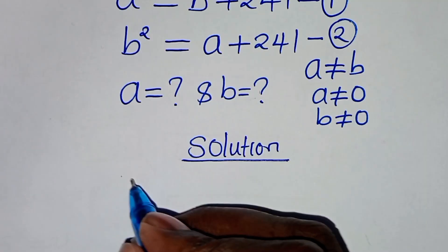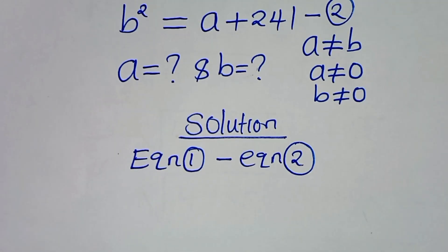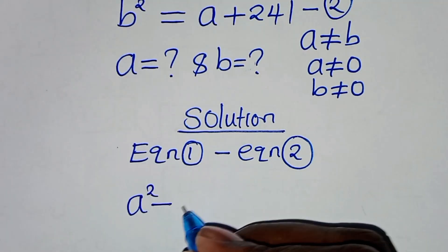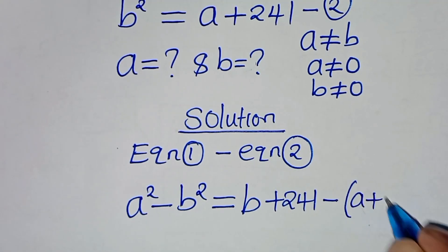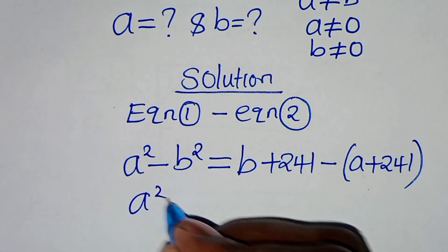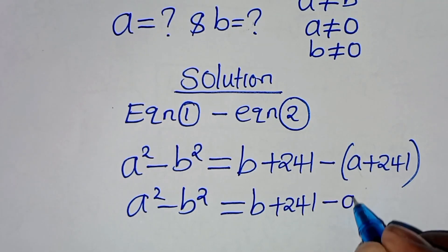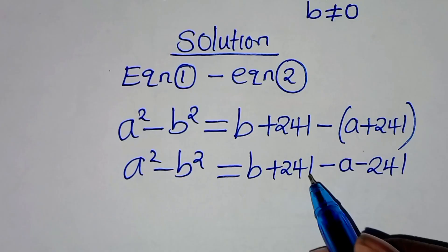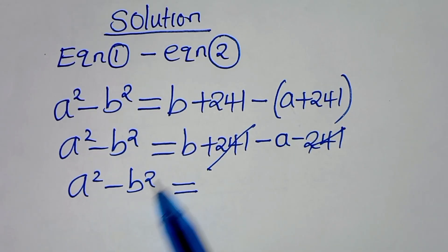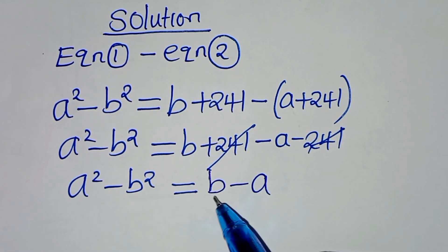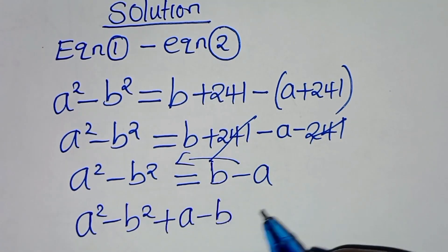Step 1: subtract equation 2 from equation 1. We get a squared minus b squared equals b plus 241 minus (a plus 241). Simplifying the right side: 241 and 241 cancel, giving a squared minus b squared equals b minus a. Rearranging, we bring b minus a to the left: a squared minus b squared plus a minus b equals 0.